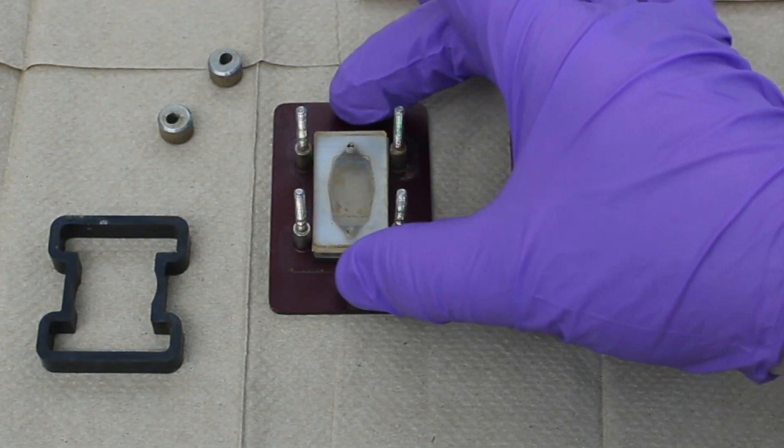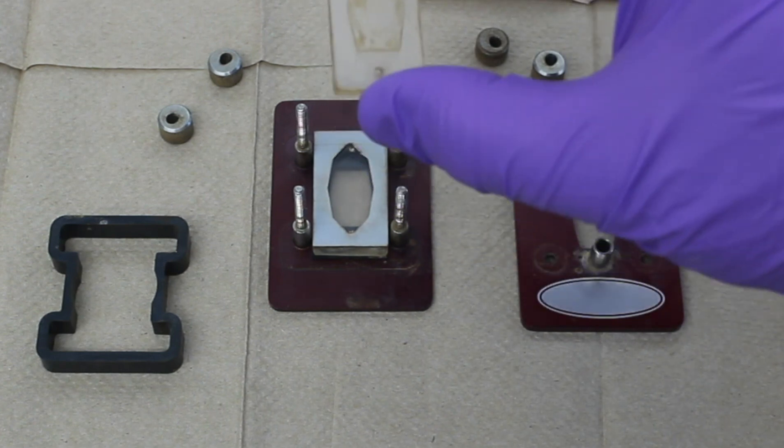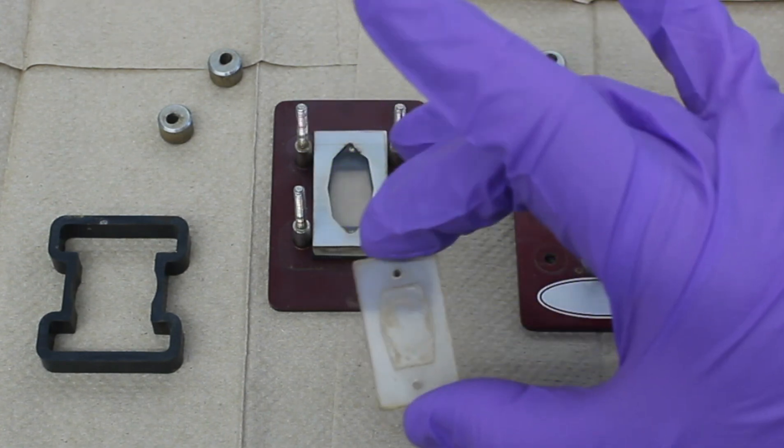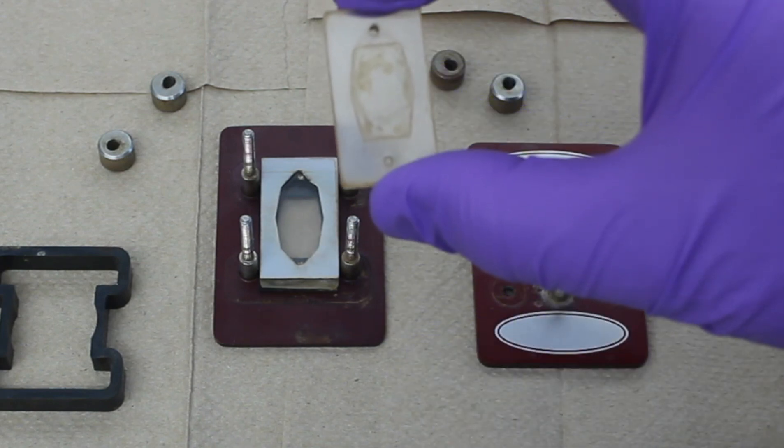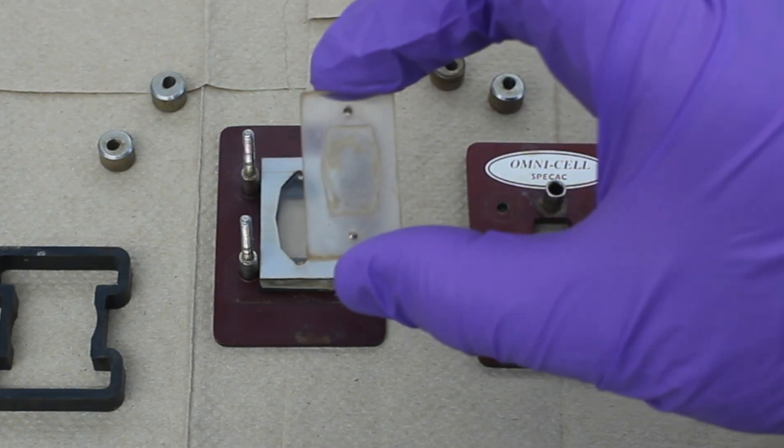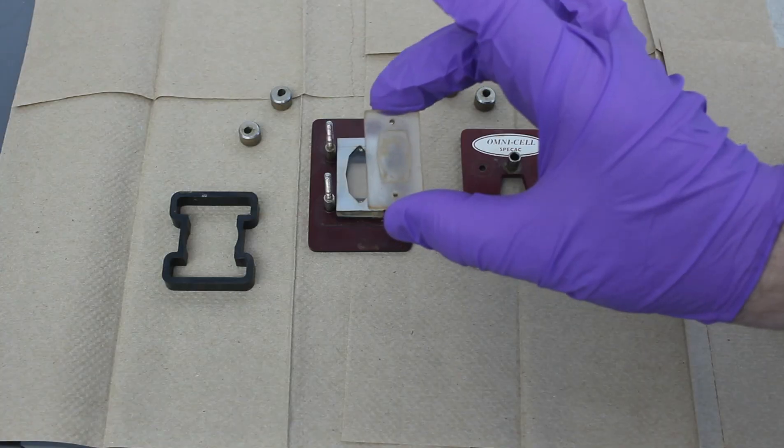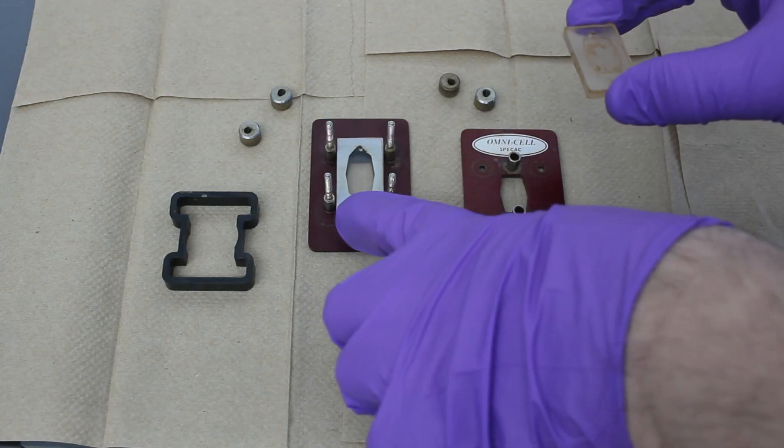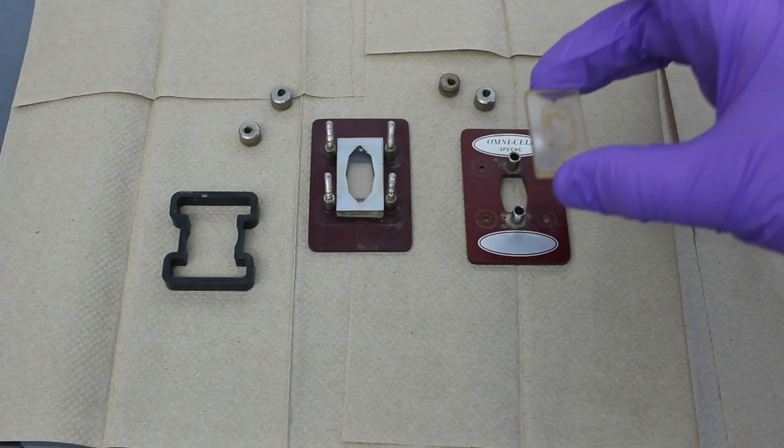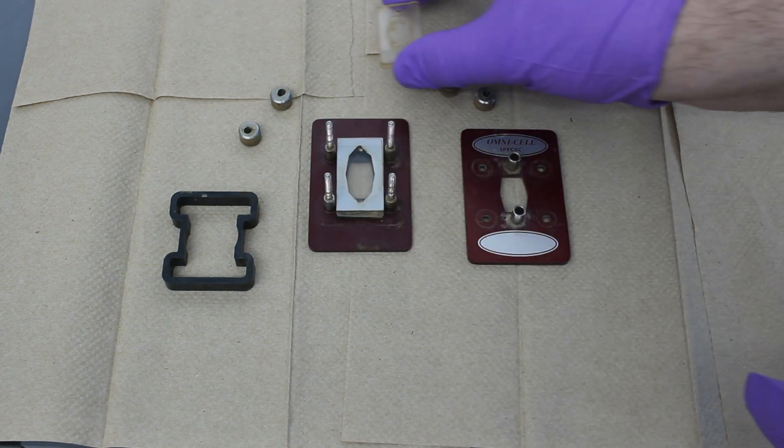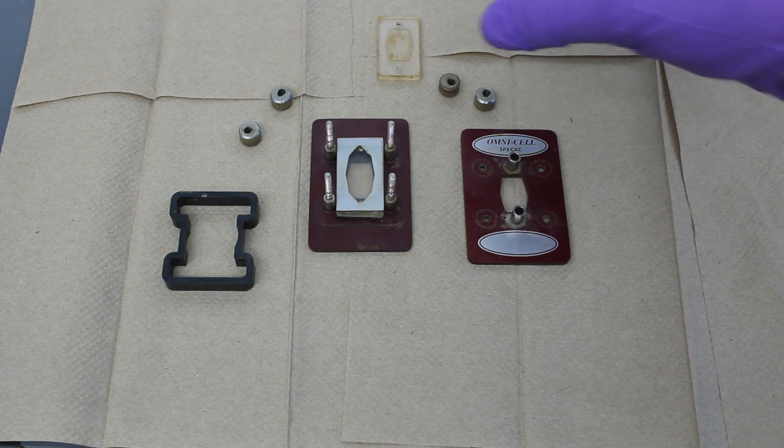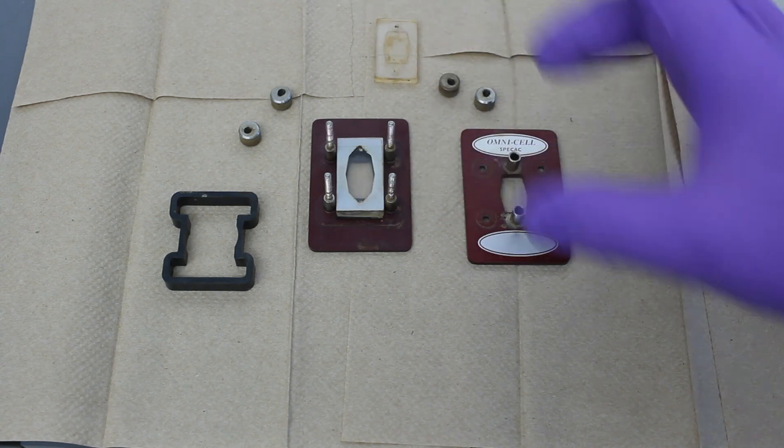And now you have to be very careful. So this is a sodium chloride plate. It has holes on top and on bottom so the liquid that you're trying to analyze can flow through the cell. This is a Teflon spacer that separates the top sodium chloride plate from the bottom one.